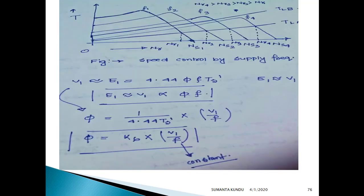We know that E1 equals 4.44 × F × Φ × TS, where 4.44 and TS are constant. If we neglect the drop across the stator, the supply voltage is approximately equal to E1, so voltage is proportional to F × Φ. At lower frequency, if frequency is reducing and supply voltage V1 remains constant, then Φ will increase — causing saturation which will increase core loss.